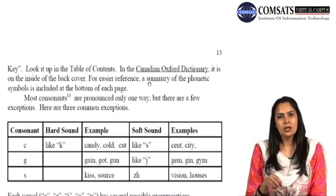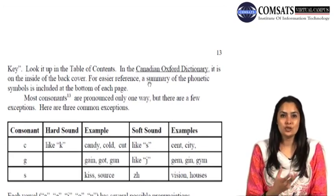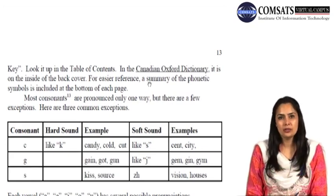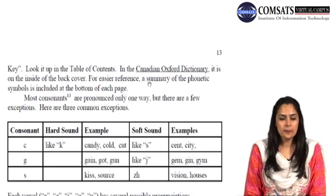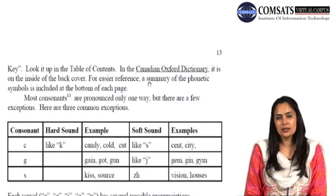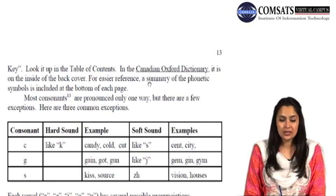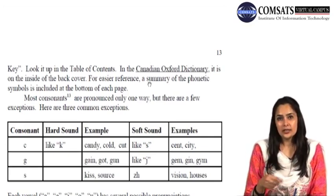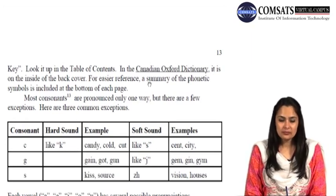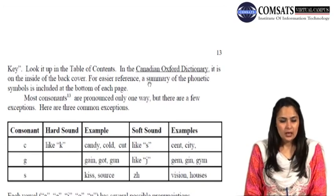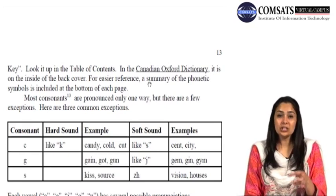This chart is just to give you an idea how sounds can differ from the letters that represent them. For example, the consonant C in a spelling can represent the hard K sound — as in candy, cold, cut, culture, class — but also a soft S sound, as in cent, city, centaurus. The consonant G can give the hard G sound as in gain, got, gun, but also a soft sound as in gem, gin, gym. So it's not necessary that a consonant looks a certain way and will always produce that particular sound — it can be different. Phonetic symbols help you a lot in identifying the pronunciation of words.